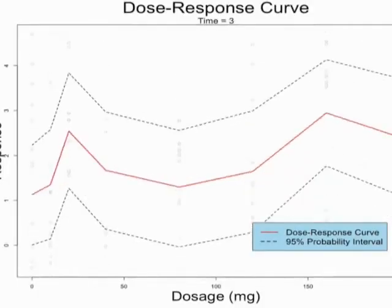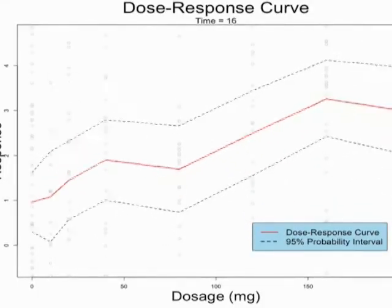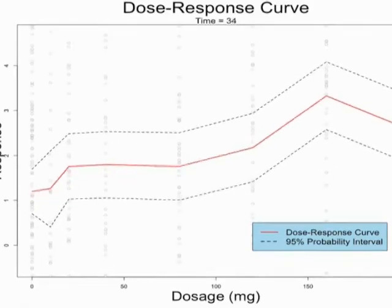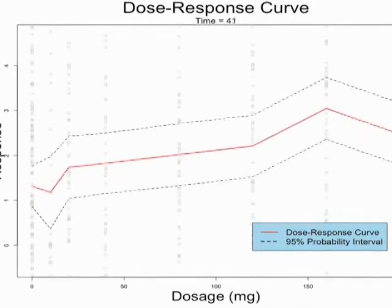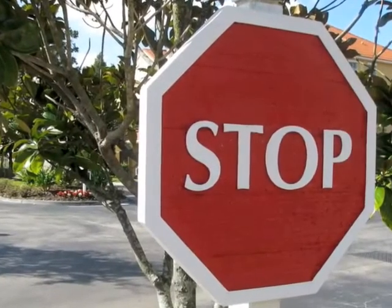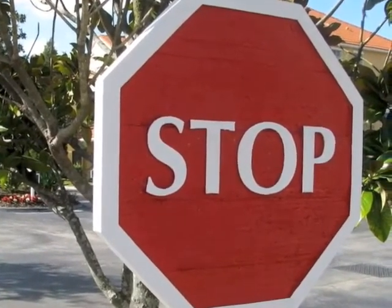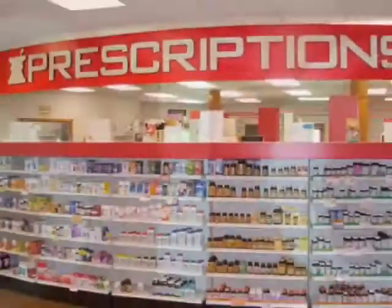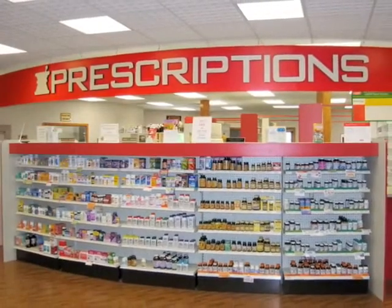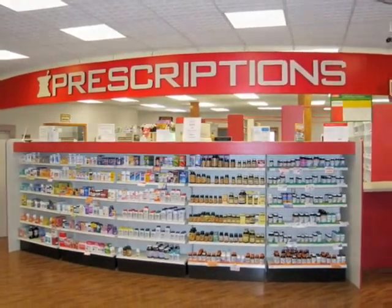Their statistical model allows a variety of dose-response relationships, improving the estimates of the true response as the trial proceeds. Their approach allows the trial to end early once enough information has been gathered, declaring the drug effective or not, which brings effective drugs to the market more quickly.